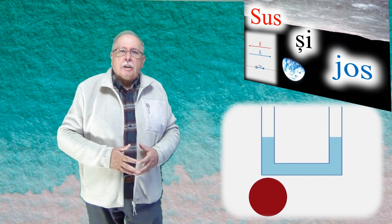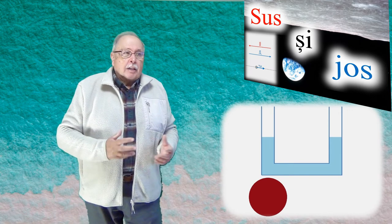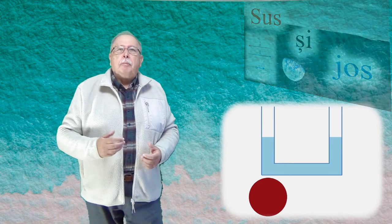Găsiți link-ul clipului în descriere. Am arătat acolo, printre altele, că prin în jos înțelegem sensul greutății corpurilor, care este același cu sensul liniilor câmpului gravitațional. Cu alte cuvinte, în jos este sensul liniilor de câmp, iar în sus este sensul opus.